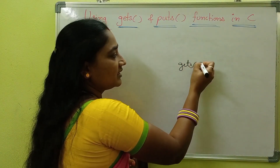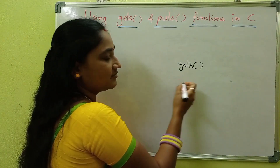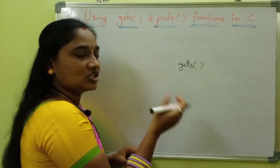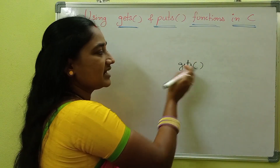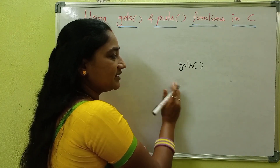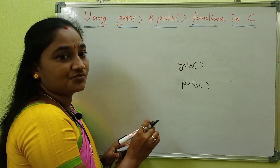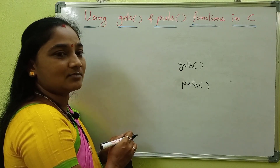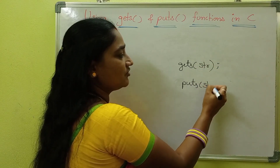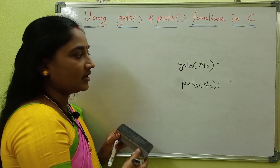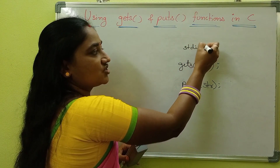It is called gets. The built-in gets function is used to read a space-separated string. In case of space-separated strings, it is better to use the gets function. And at the same time, to display that string, it is better to use the puts function. No need to specify the format specifier with these functions. Both gets and puts are in the stdio.h header file.